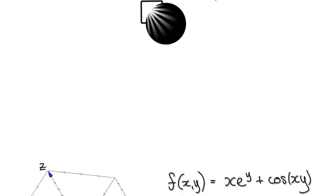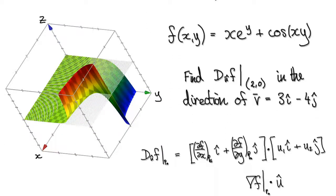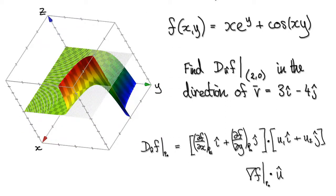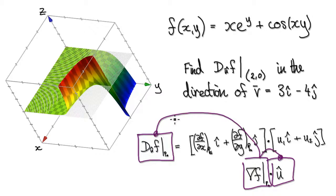In the previous video, I gave you the theory behind the relationship between the directional derivative, the gradient vector, and the unit vector. So in this video, I'm going to illustrate the relationship between these three with a working example.